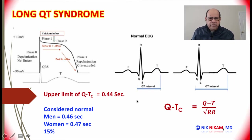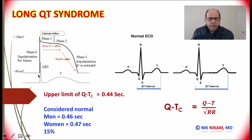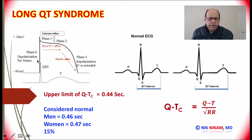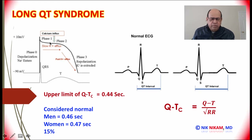Before we jump into long QT syndrome, let us understand some of the electrical changes that happen during an action potential in a myocardial cell. The resting myocardial membrane potential is approximately 80 to 90 millivolts. When an electrical impulse comes through the myocardial cell from a Purkinje fiber, it activates the sodium influx which results in phase 0 of the action potential. That is followed by a rebound due to potassium movement which is represented by phase 1, and the calcium influx maintains phase 2 of the action potential.